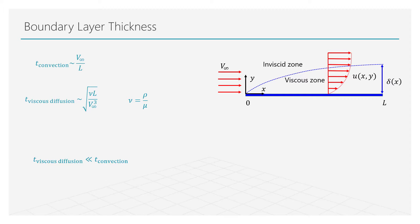This means that taking the ratio of the convection time scale over the diffusion time scale, this result should be much larger than one. The terms presented here under the square root are nothing but the Reynolds number. Hence, we found that the Reynolds number must be much larger than one for the boundary layer to be thin.